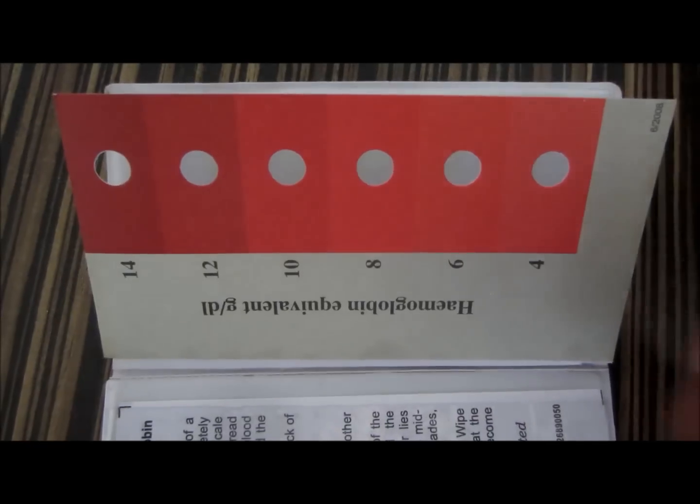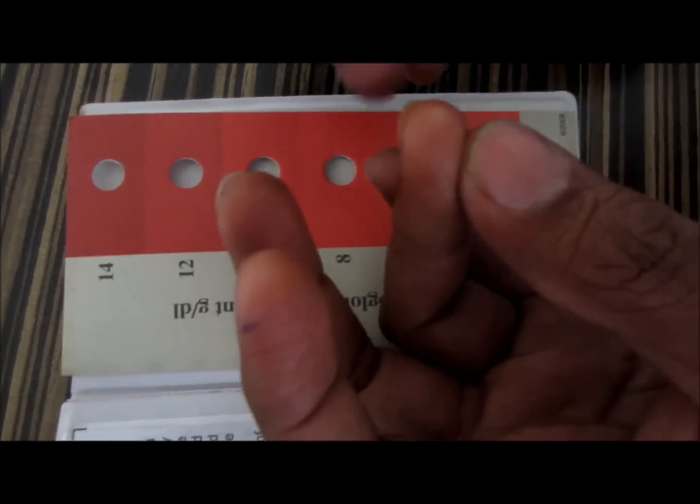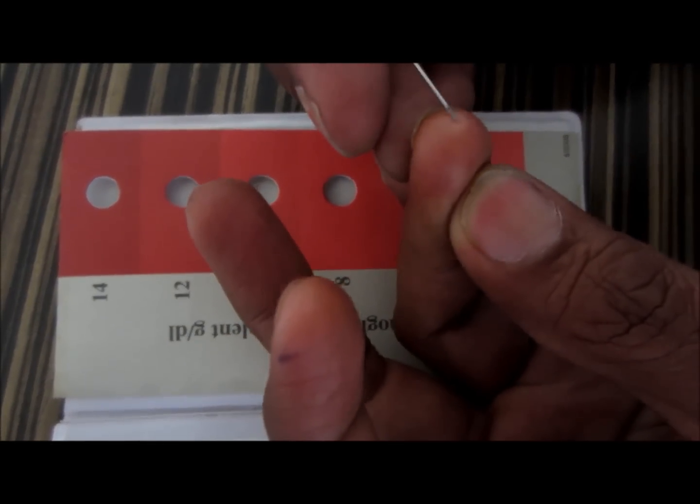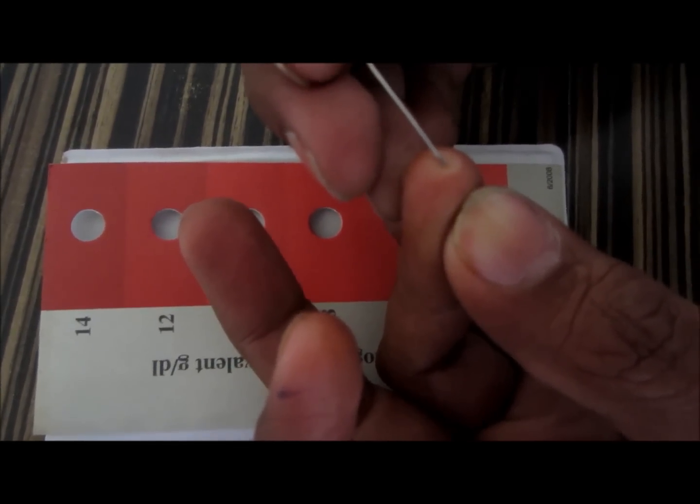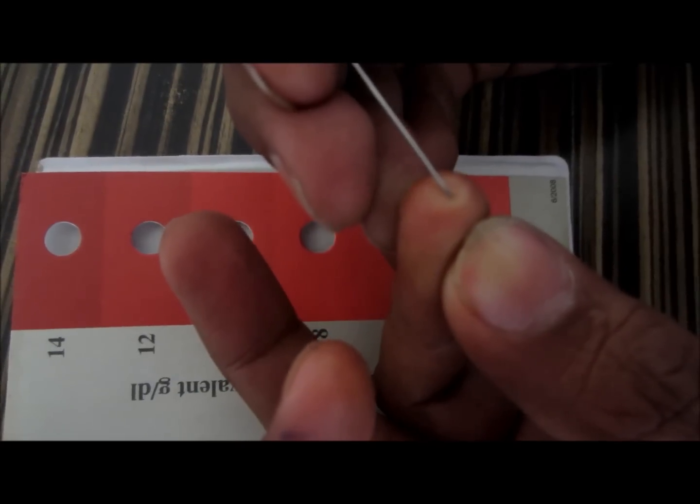Hi friends, this is a quick way to evaluate your hemoglobin in the blood. You need to have this paper with the color chart here. You can match the color of the strip to the blood, and you need to prick your finger.